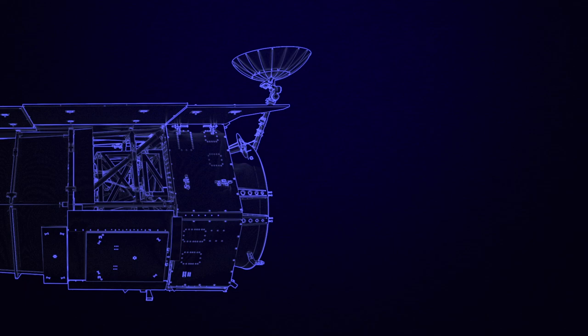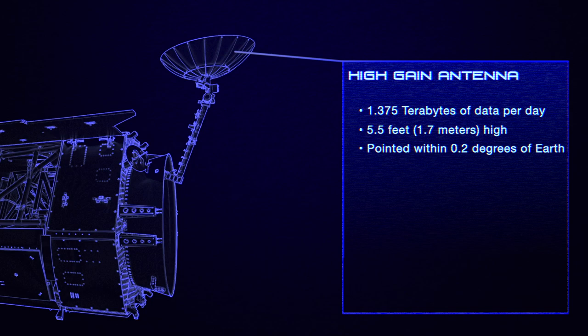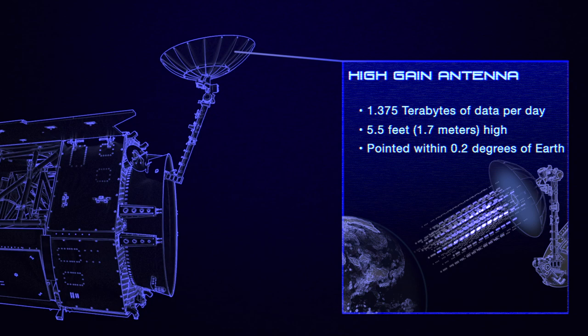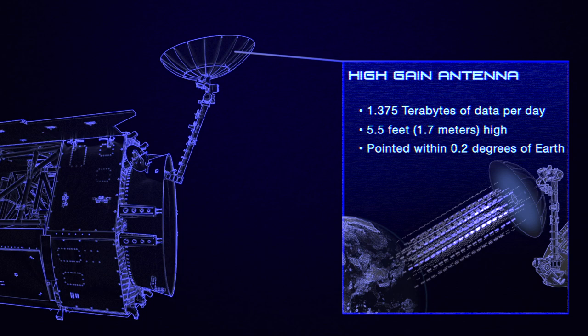At Roman's back is its primary means of communication with Earth, the high-gain antenna. This antenna will be responsible for sending nearly 1.4 terabytes of data to ground stations every day. That's the equivalent of 460 hours of streaming video.